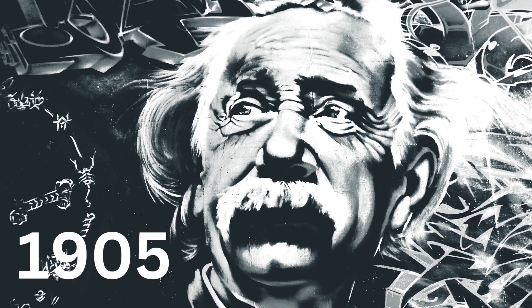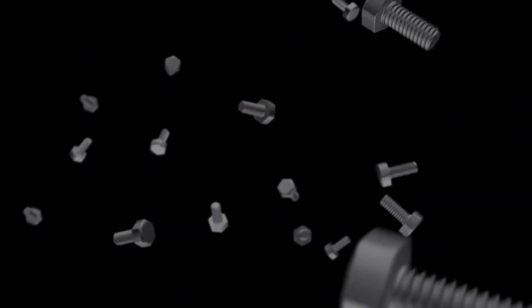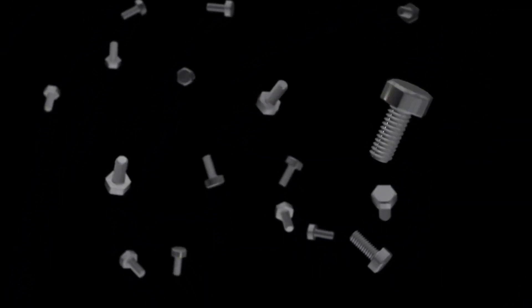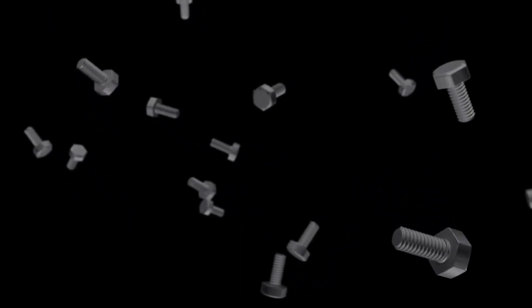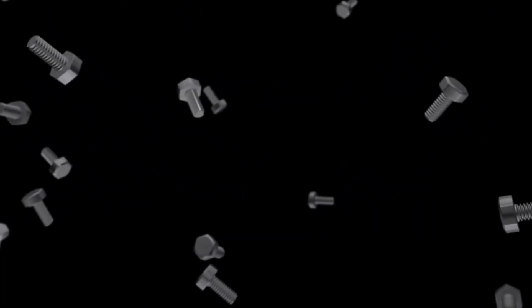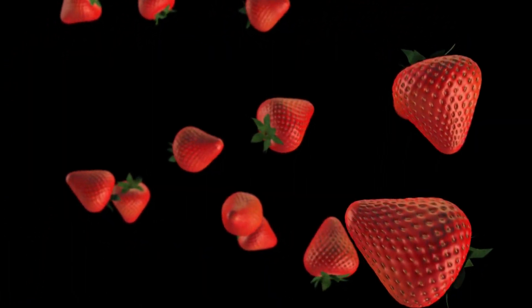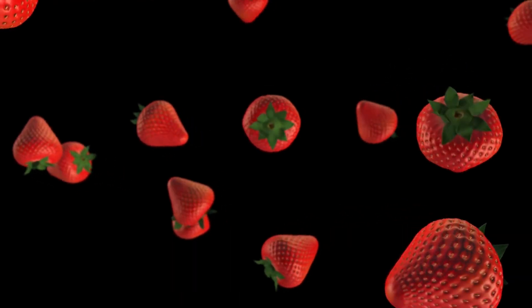In 1905, Einstein's publication of the special theory of relativity explained how multiple objects move in relation to each other when there were no forces of gravity present to influence their movement. And there were two main assumptions and principles to the special theory of relativity.